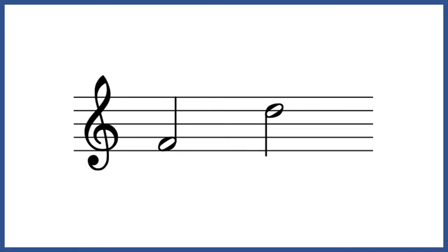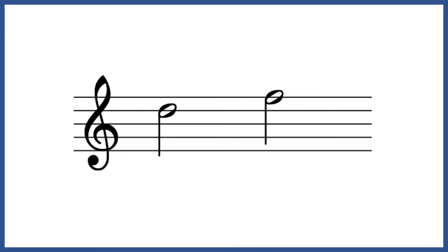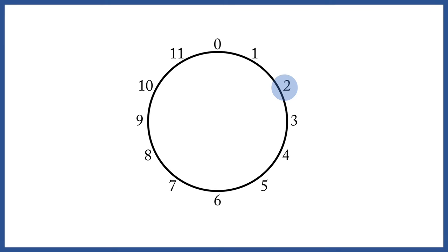An ordered pitch class interval of 9 semitones could be represented with the F below the D, or with the F above the D. The only important thing is that the F comes before the D. By using the clock face, this becomes very clear. The ordered pitch class interval between D and F is 3 semitones, because the D comes before the F.